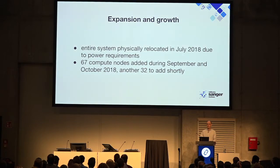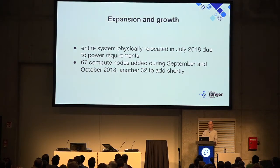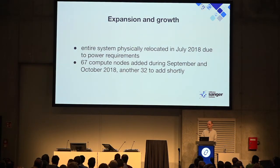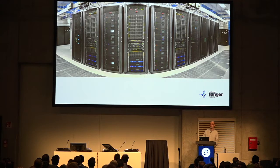Another thing we did was physically relocate the entire system, mostly driven by power constraints. The original data centre hall was about 20 kilowatts per cab. The new hall has direct-cooled cabs — we can go to over 35 kilowatts per cab. We've recently added another 67 compute nodes and have another 32 coming. When that's in, it will be about double the original size.